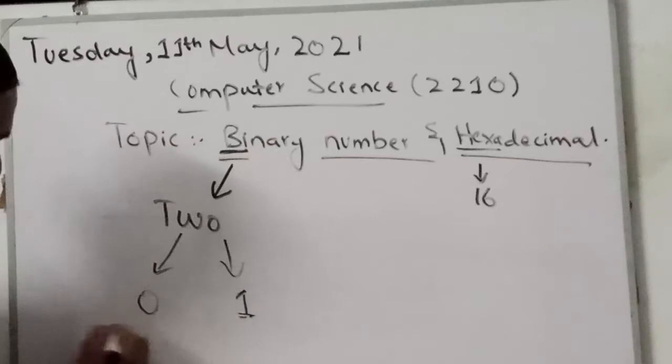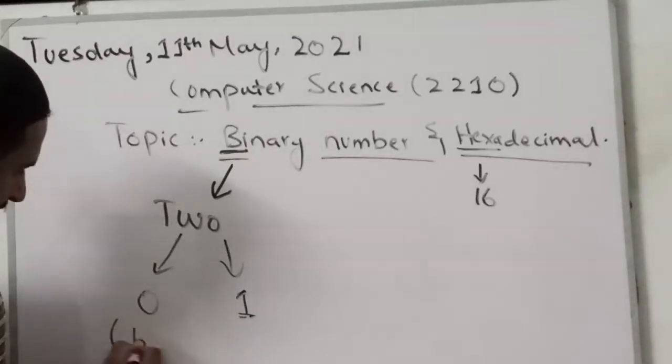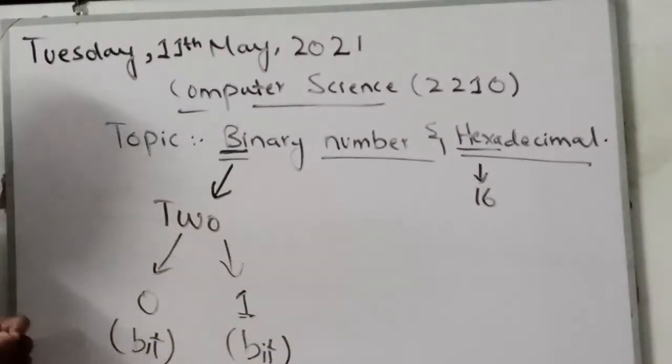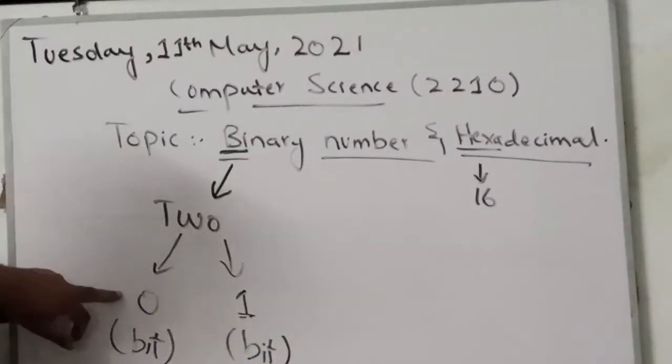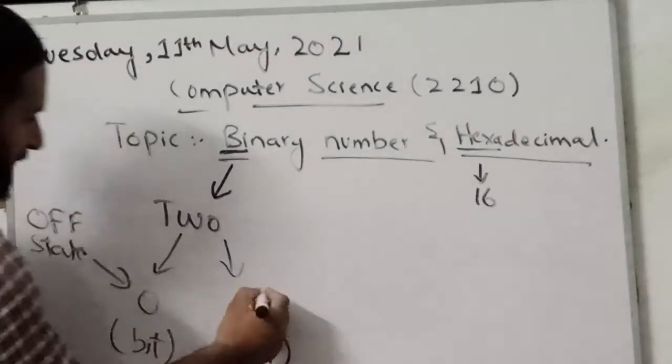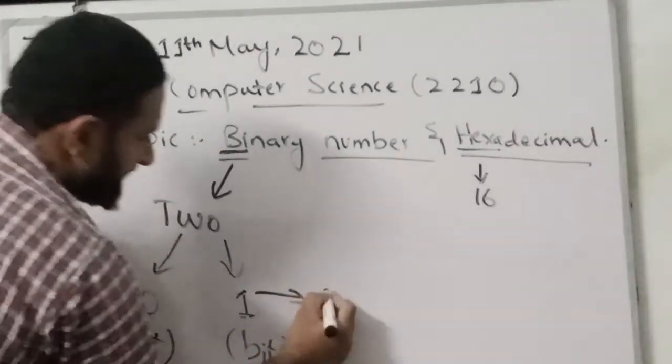In computer language, you can use 0 or 1. And this single digit is called a bit. So you can also call this 0 an off state and this 1 an on state.